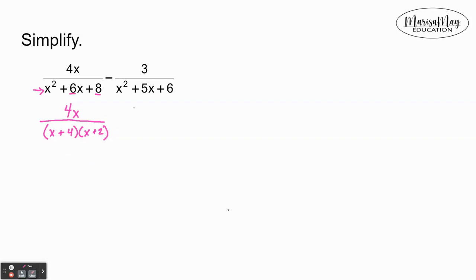Now I'm gonna do the same thing with the second fraction. I'm gonna leave the 3 on top and factor that x² + 5x + 6 into (x + 3)(x + 2). Again, thinking what two numbers would multiply to give me 6 but add to give me 5, that had to be the 3 and 2.